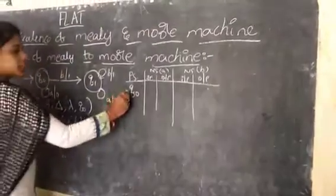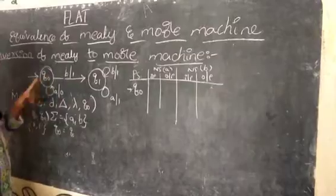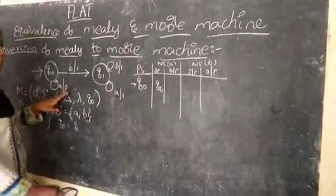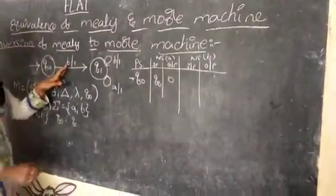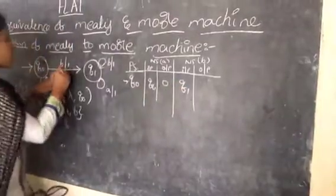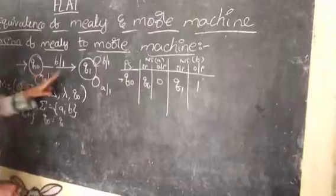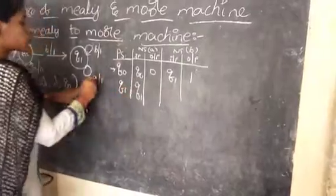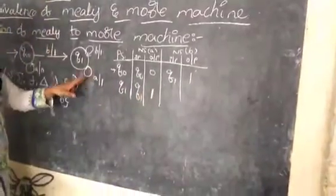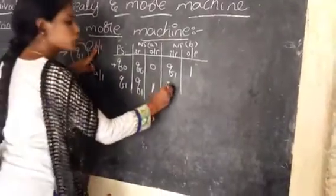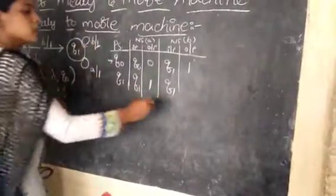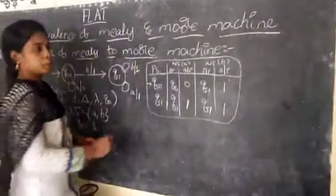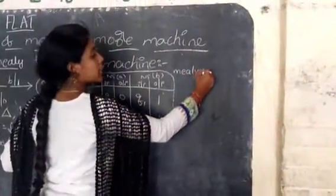Here Q0 is the initial state. Q0 on A it will go to Q0, and the output for A is 0. Next, Q0 on B it will go to Q1, and the output is 1. Next, Q1 on A it will go to Q1, and the output is 1. Q1 on B it will go to Q1, and the output is 1. This is the transition table for the Mealy machine.